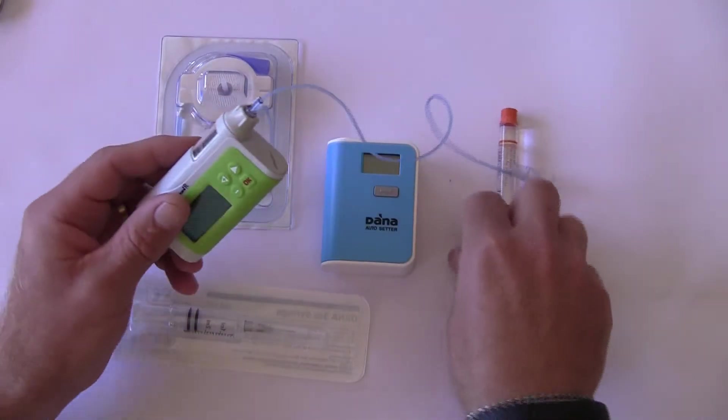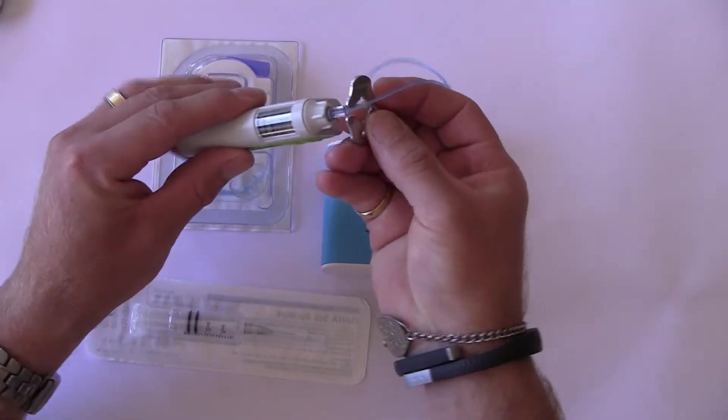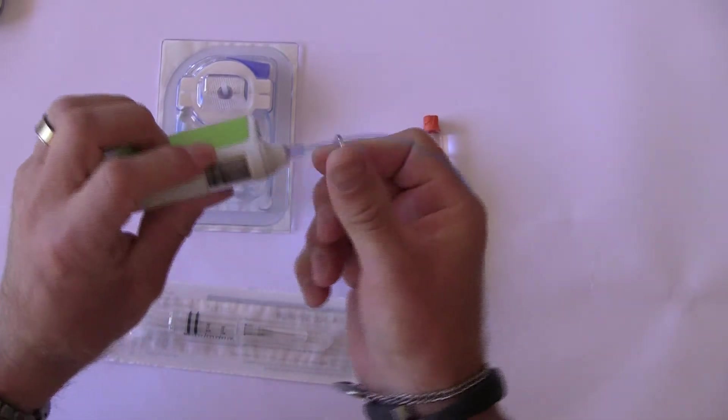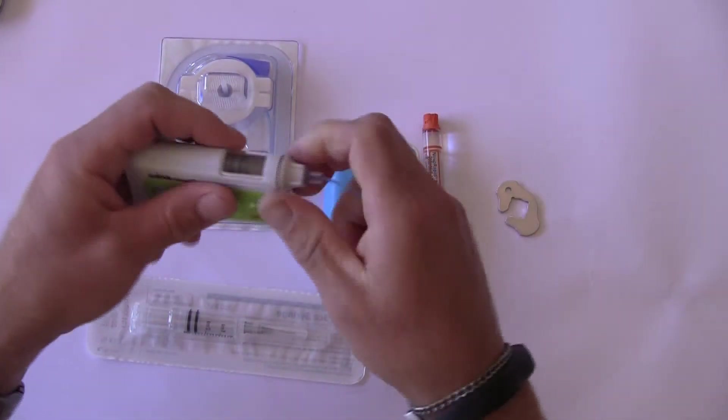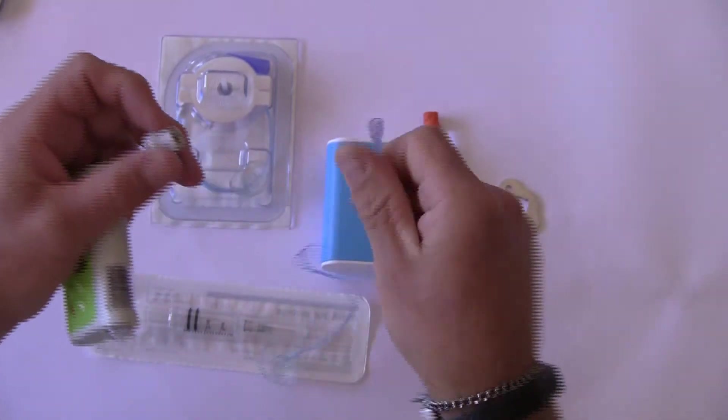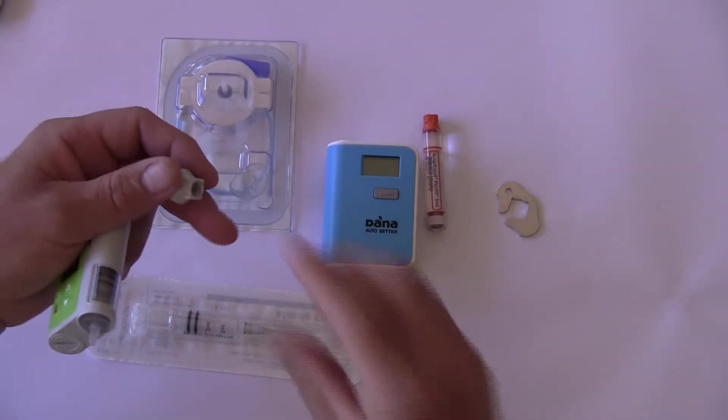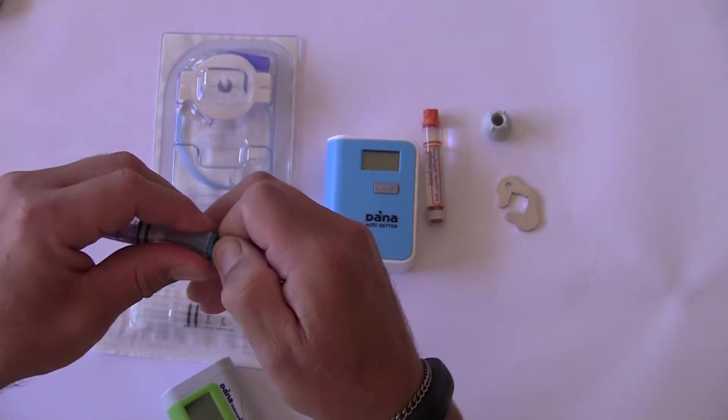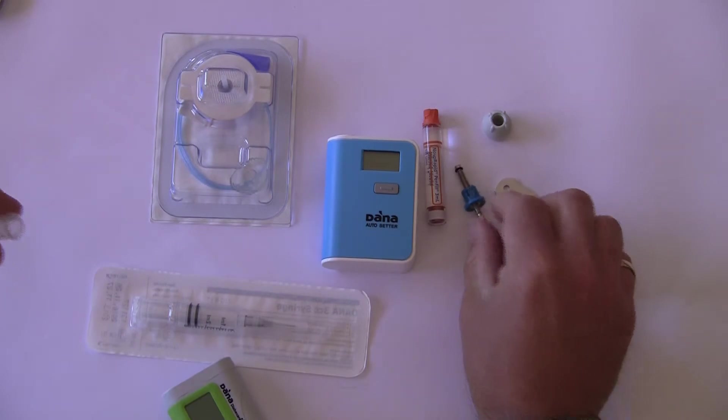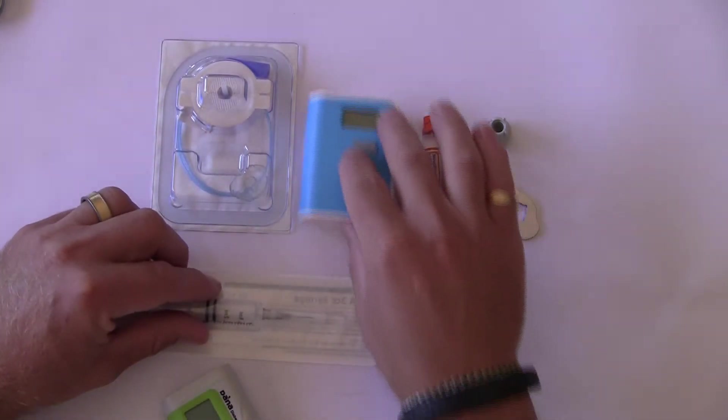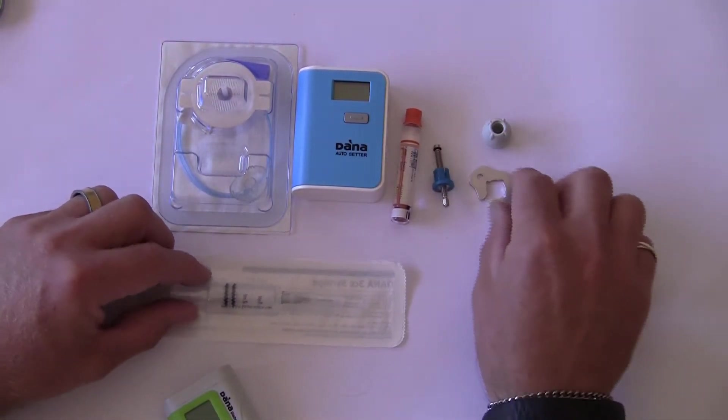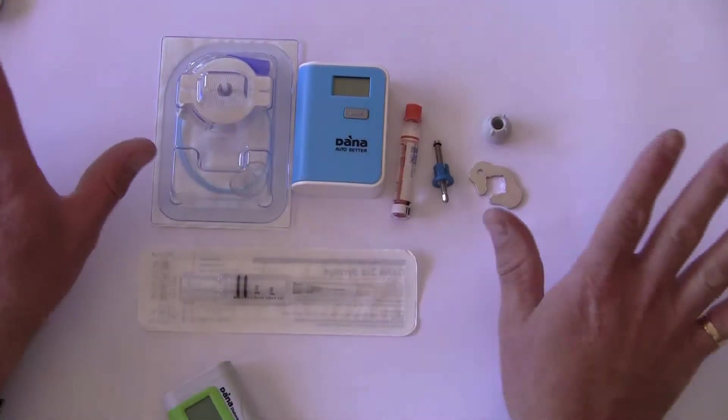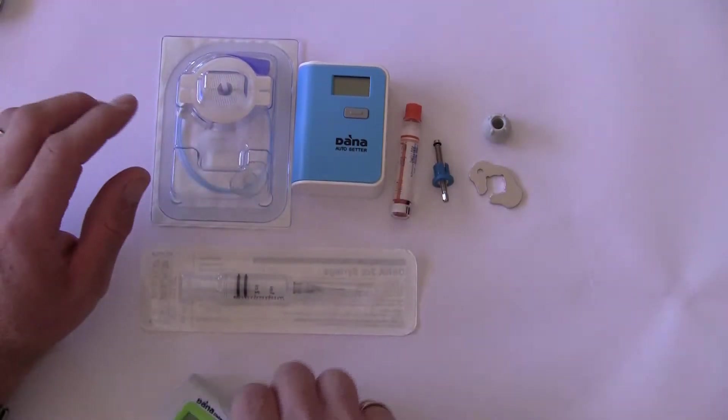So to begin the process we're going to open the Dana pump up. Using the Dana battery key we turn the reservoir cap in a clockwise motion to open it up. We can remove the tubing, the cap we reuse, take the old reservoir of insulin out, remove the push rod off the back which we will reuse. And then to start the process we make sure we have clean dry sterilized hands, clean work surface and bench and all the components ready to get going.